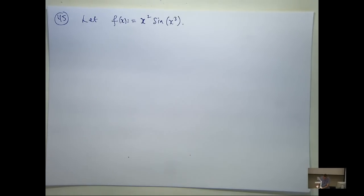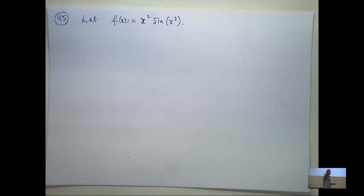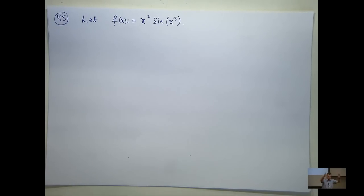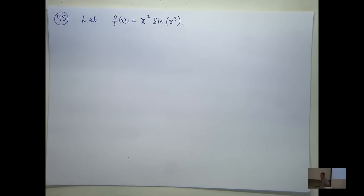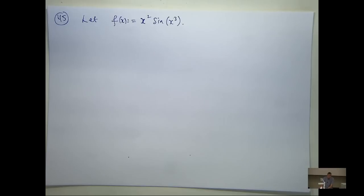And show that this function has a stationary point at x equals 0, and then classify the stationary point. That's what it's asking you to do. Now, sort of just intuitively, let's say this function has a stationary point at x equals 0 — it has a turning point. Who can tell me, without doing any calculations whatsoever, what the turning point should be? Suppose it has a turning point at x equals 0 — what is the nature of the turning point?